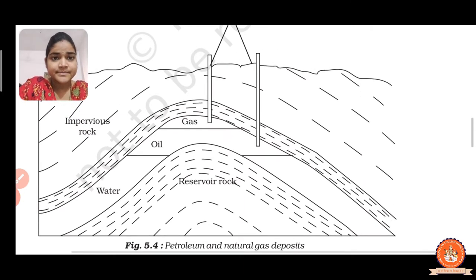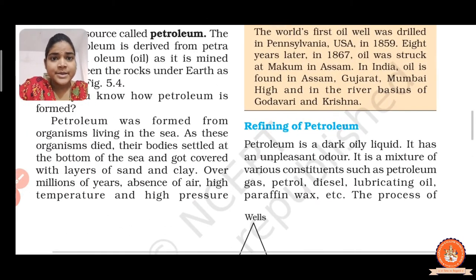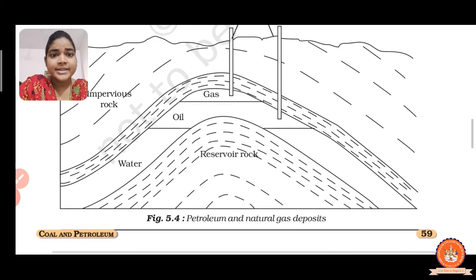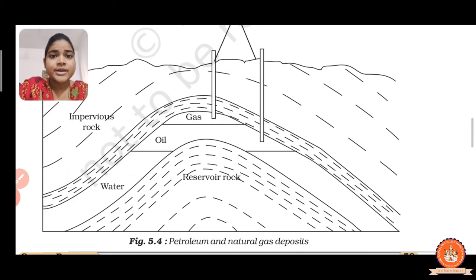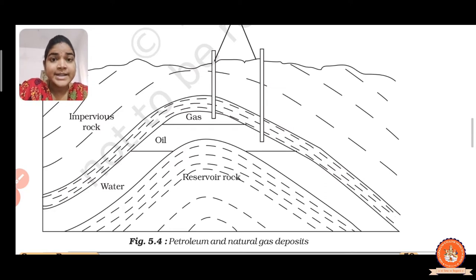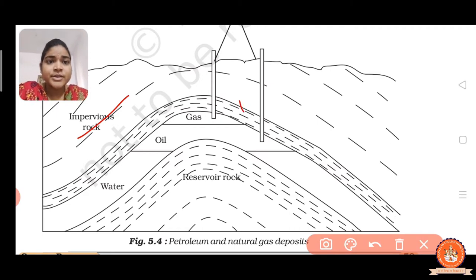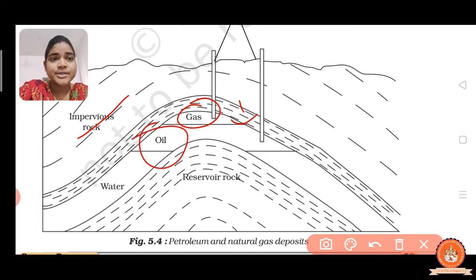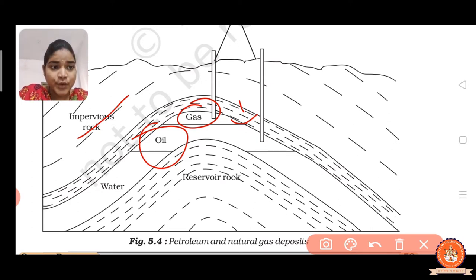Here we see impervious rock, which means rock that does not allow anything to pass through — it is very hard. Below the impervious rock, natural gases are present because gas is lighter than liquid. Above the water and below the gas, oil is present because the density of oil is lower than water, that's why it floats on water.